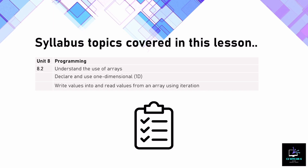So as you can see, the syllabus topics I've taken are from unit 8. I want you to understand the use of arrays, in particular a one-dimensional array, and how we write values into them and read values from them. We're going to use iteration to do so — a loop. The reason I've done this is that in the next lesson I'm going to go through some methods and algorithms that use all of the topics we've done so far with pseudocode — putting together loops, if statements, conditional statements, assigning variables, and basic sequencing.